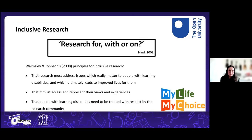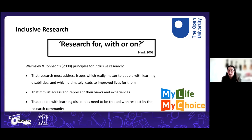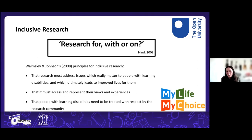This is reflected in Walmsley and Johnson's principles for inclusive research. The first principle: research must address issues that really matter to the learning disabled community and ultimately lead to improved lives for them. By involving them from the very beginning, they get the control and power to say whether this actually matters to them. It's very easy for academics to make assumptions about marginalized communities — assuming they would want to be engaged in something when they may not.